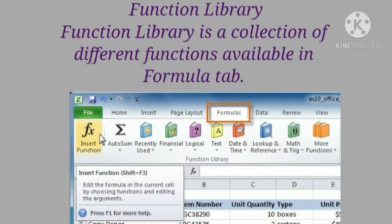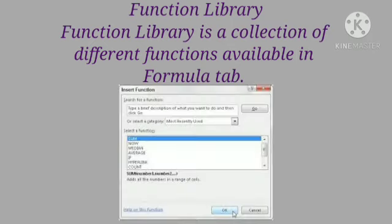Function Library is a collection of different functions available in the Formula tab. To invoke Function Library: first, click Insert Function; second, select the category and the function you want to use; click on OK button; fill the arguments in the argument boxes; and then click OK button. For example, we can use the Date function from Date and Time category for showing the date.